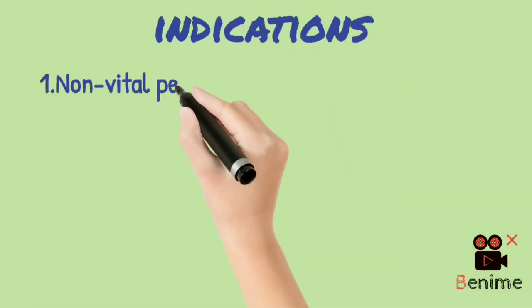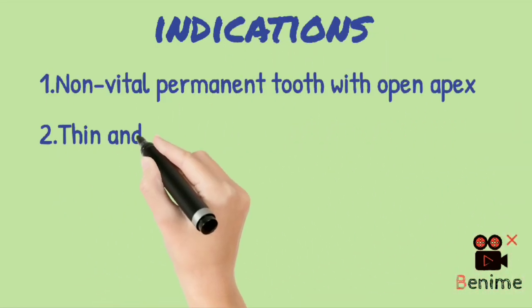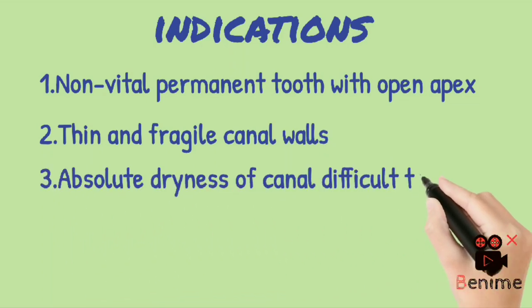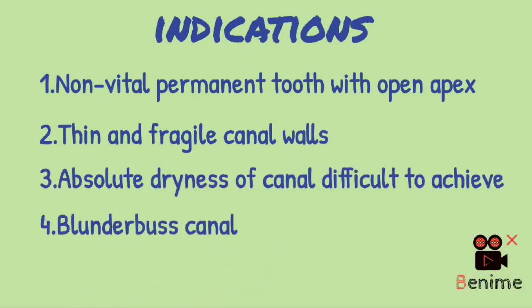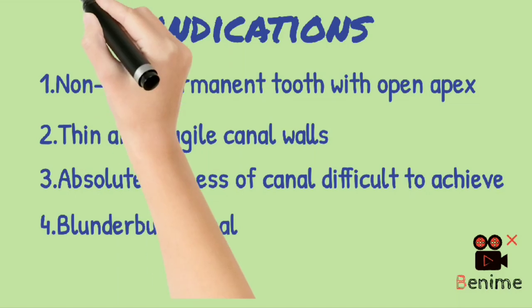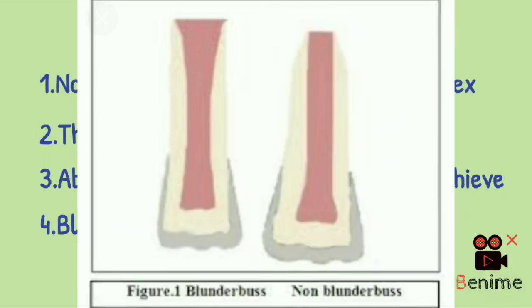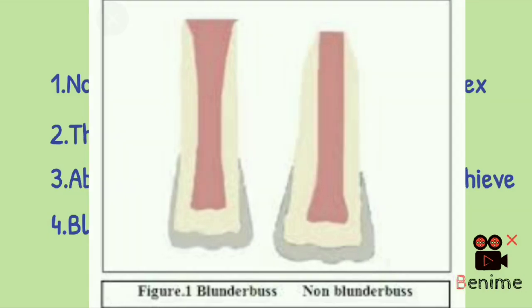Now let's get into indications. The first point, as I said earlier, it is indicated in a non-vital permanent tooth with open apex. Secondly, in case of thin and fragile canal walls, because mineralized tissue formation will prevent fracture of the root. Next, in cases where it is difficult to achieve absolute dryness of canal. Lastly, it is also indicated in blunderbuss canals, meaning a tooth root apex that widens at its end. And non-blunderbuss means the walls of the canal may be parallel to slightly divergent.